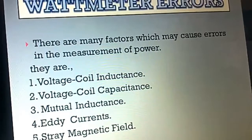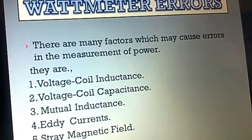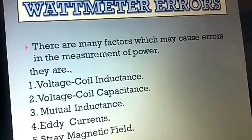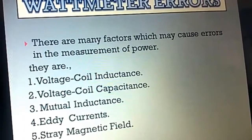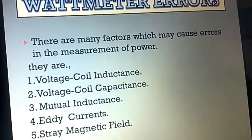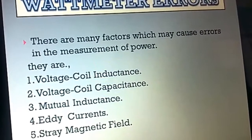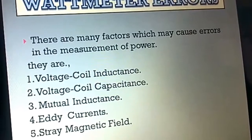As a unity power factor wattmeter is used, cosφ equals 1, and the power in the load equals the voltmeter reading multiplied by the ammeter reading. Wattmeter errors: there are many factors which may cause errors in the measurement of power. They are voltage coil inductance, voltage coil capacitance, mutual inductance, eddy currents, and stray magnetic field.